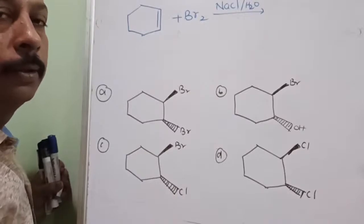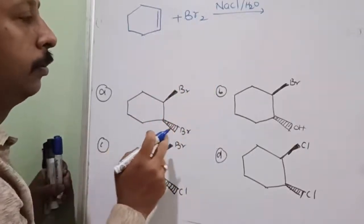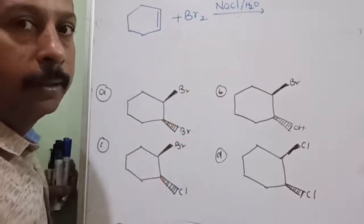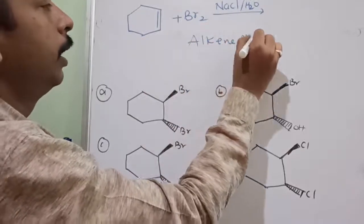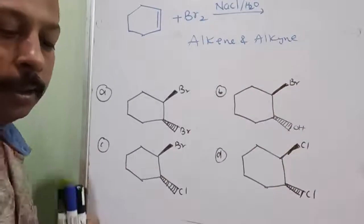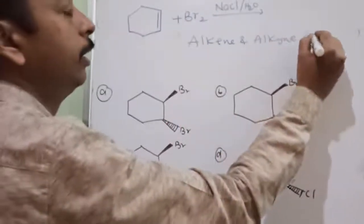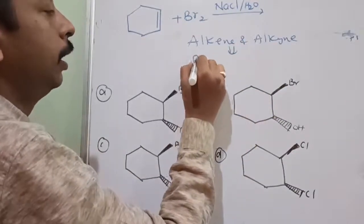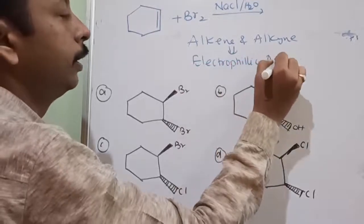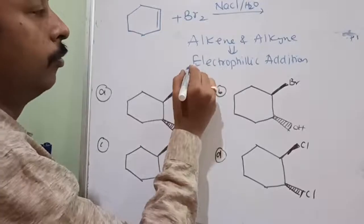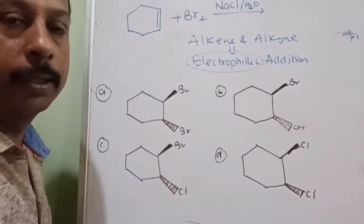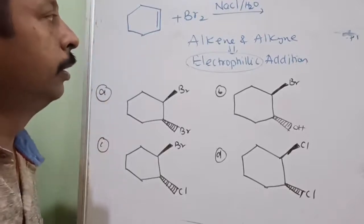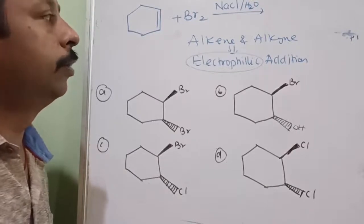Normally people think bromine will add — that's all, only this is possible. But through the mechanism I will tell you. Alkenes and alkynes — there are three types of reactions that normally take place. Alkenes and alkynes, whenever they are there, will be electrophilic. What is the characteristic reaction? Electrophilic addition reaction. That means on the double bond, who will attack first? The electrophile will attack first. What is the electrophile? Electron deficient — either it should have a positive charge or electron deficiency.